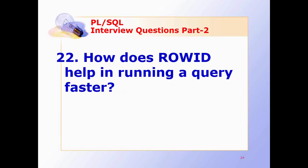How does a ROWID help in running a query faster? ROWID is the logical address of a row and is not a physical column. It is composed of a data block number, a file number, and a row number in the data block. Thus, I/O time is minimized when retrieving a row, resulting in a faster query.